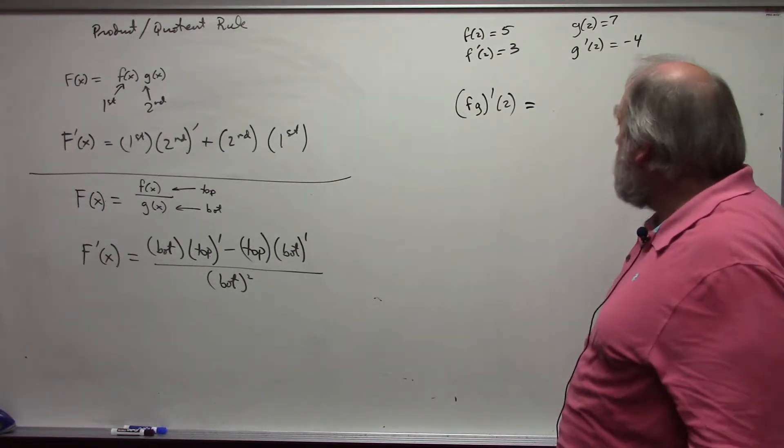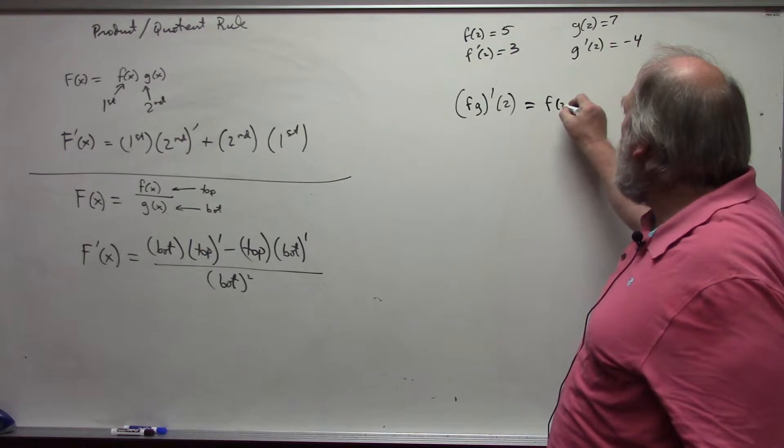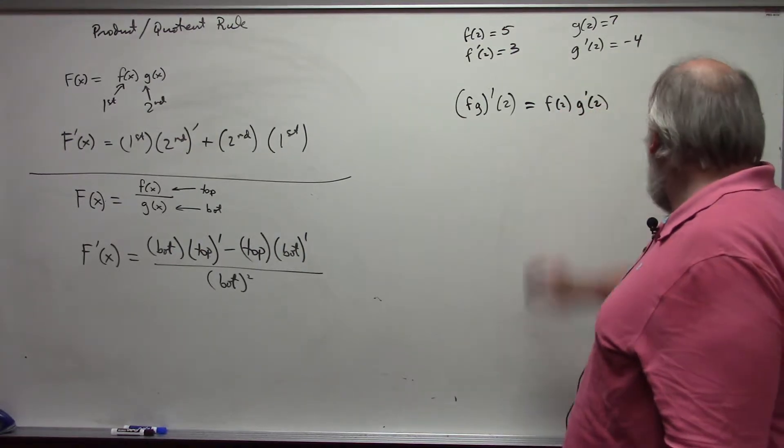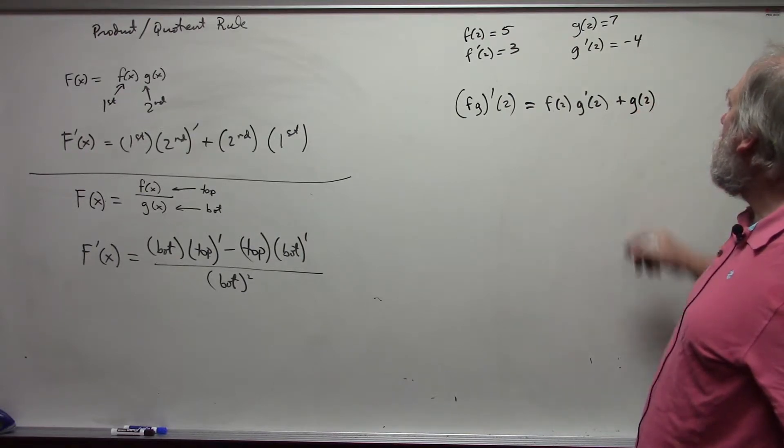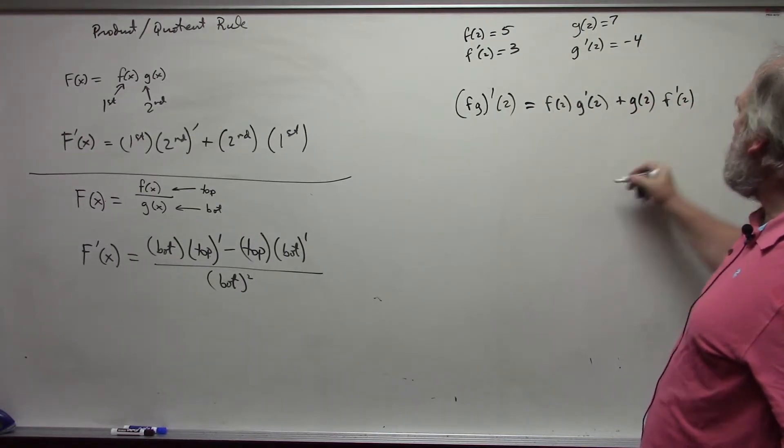This would be first, f of 2, times the derivative of the second, g prime of 2, plus the second, g of 2, times the derivative of the first, f prime at 2.